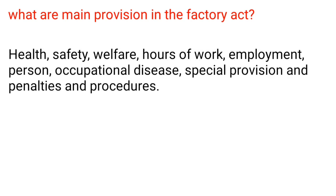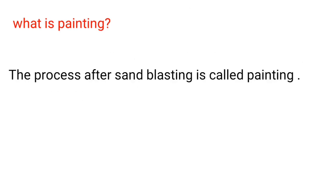What are the main provisions in the Factory Act? Health, safety, welfare, hours of work, employment, persons, occupational disease, special provisions, and penalties and procedures.